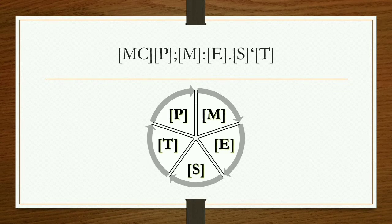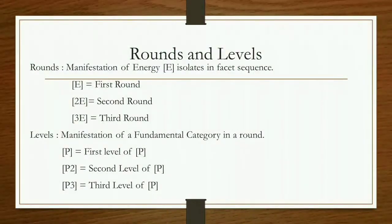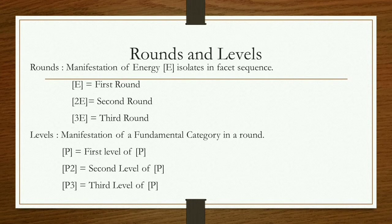When it is called a round and when it is called a level — here is the definition. Rounds: if there is a manifestation of energy isolate in the facet sequence, the energy isolate always indicates how many rounds have ended. If there is one energy isolate, one round is completed. Energy isolate indicates the completion of a round.